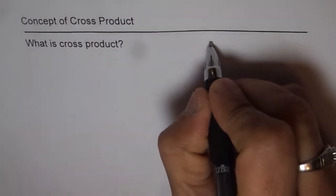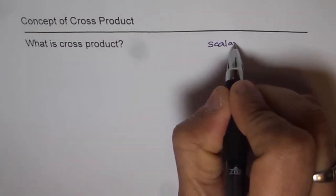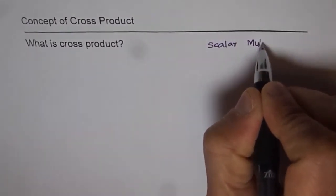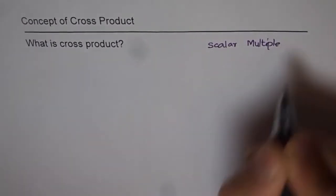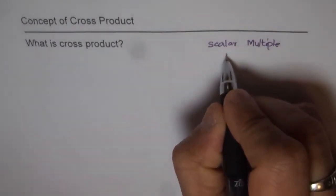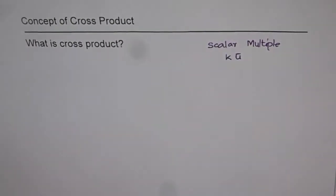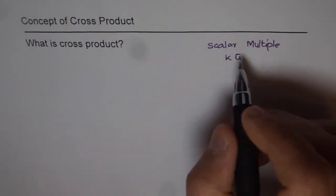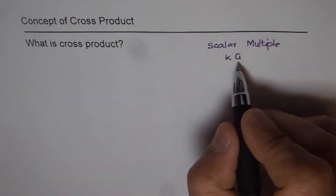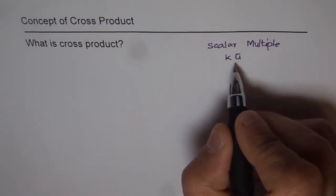You learned about scalar multiple, multiplying by a scalar quantity k and the vector u. Scalar multiple gives you a collinear vector of different magnitude and it can also reverse the direction. So the scalar multiples have two effects: one, the magnitude can be changed and the direction can be reversed, or it makes collinear vectors basically.